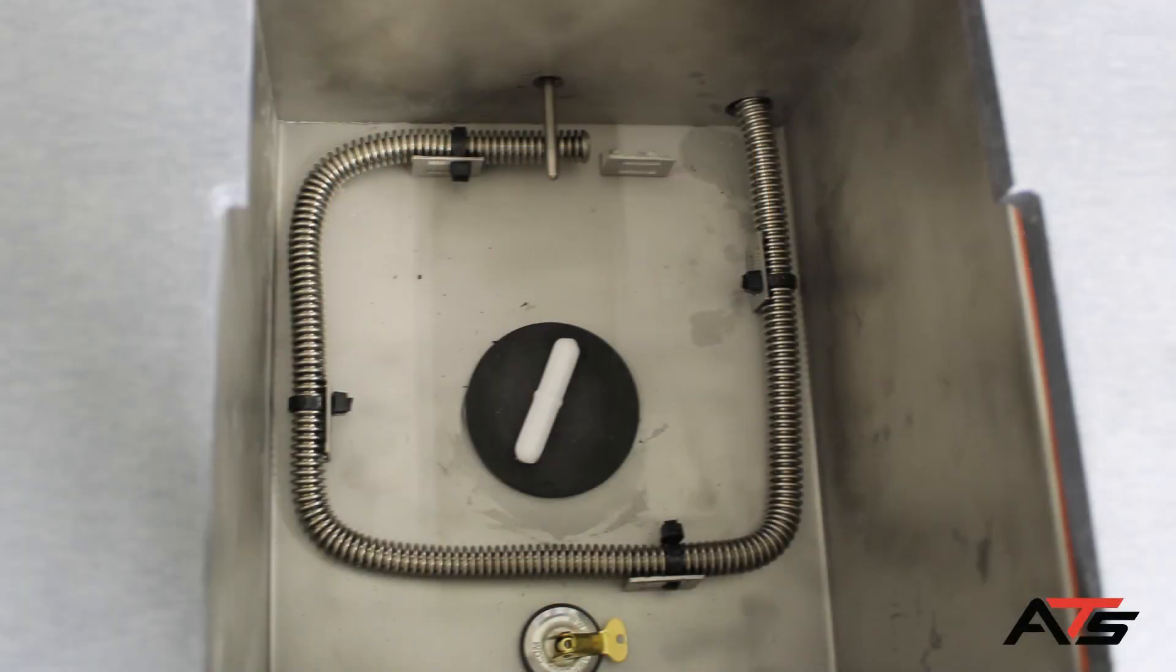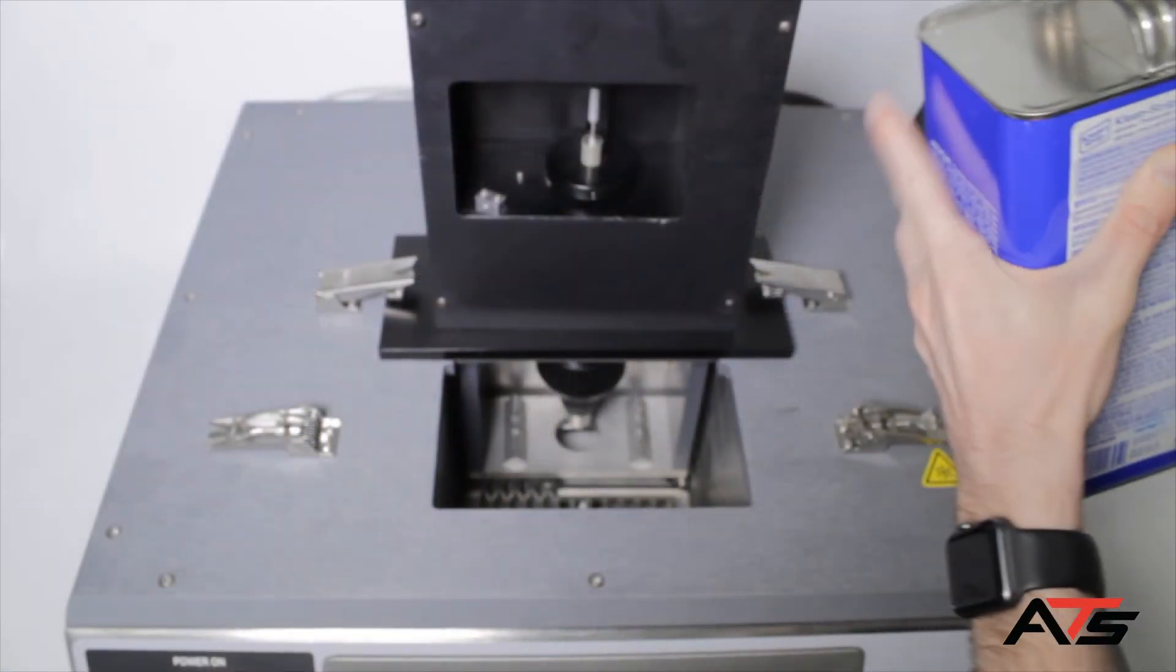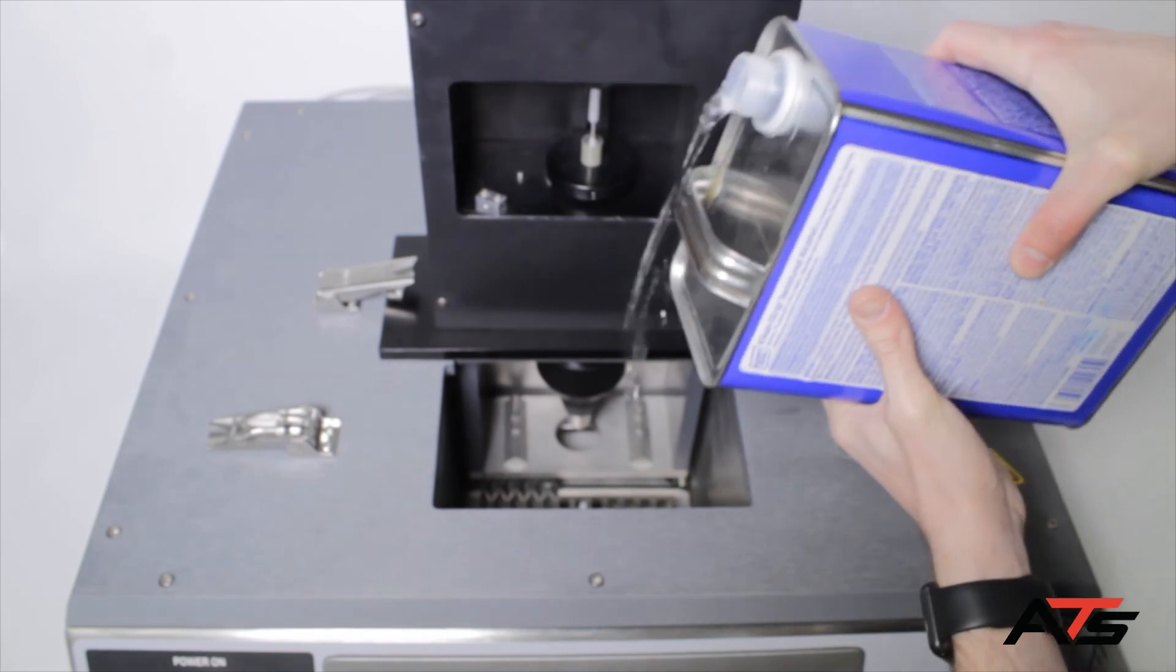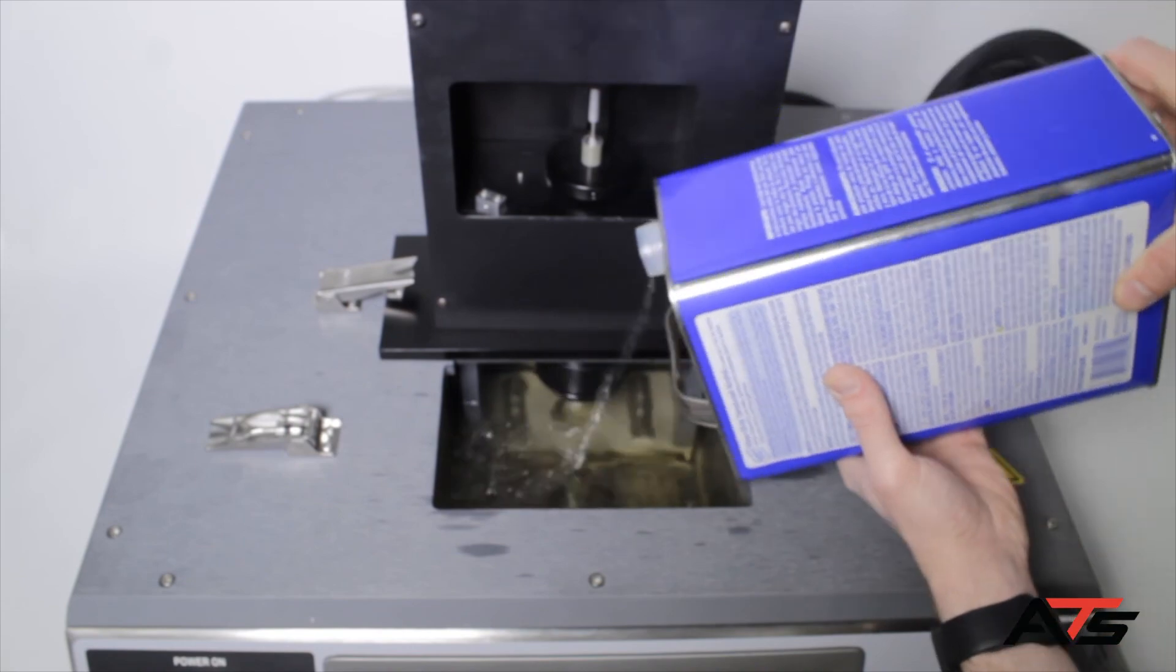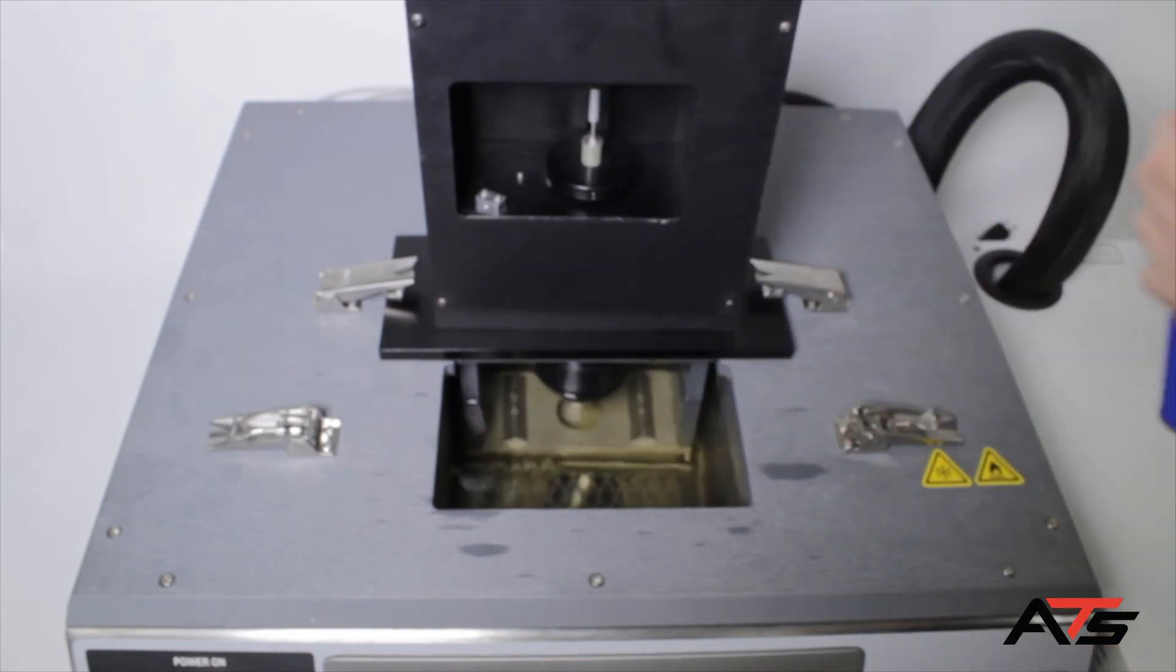Before filling the bath, place the magnetic stirrer in the base of the bath and ensure that the drain plug is secured. Fill the BBR with 1.5 gallons so the liquid is approximately 1.5 to 2 inches from the top. Refer to individual test specifications for fluid type.